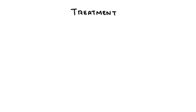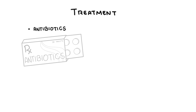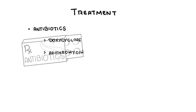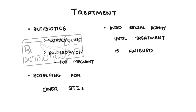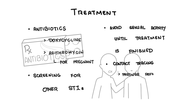Treatment of chlamydia infections includes antibiotics — doxycycline orally or azithromycin. Azithromycin is preferred for pregnant women. It is important to also screen for other sexually transmitted infections; co-infection with gonorrhea is common, and testing for HIV and hepatitis B virus is also important. Patients should avoid sexual activity until treatment has finished, and contact tracing should be commenced through partner referral.